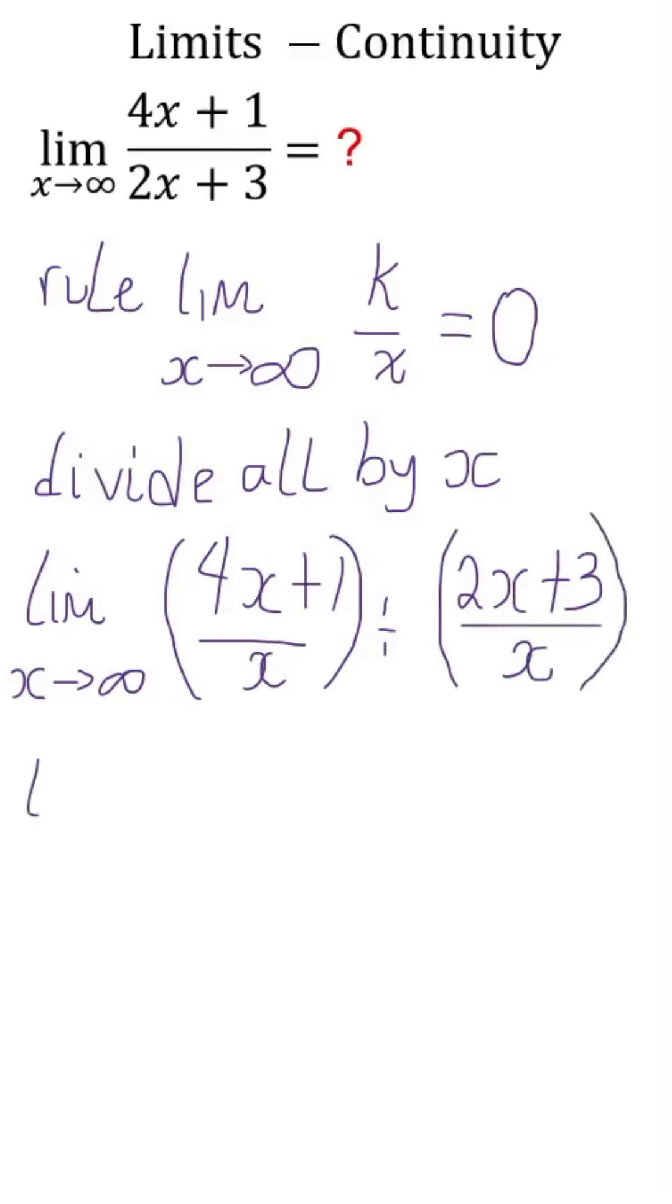Notice the fractions 1 divided by x and 3 divided by x. They can be set to zero because they obey the rule of k divided by infinity equals zero.